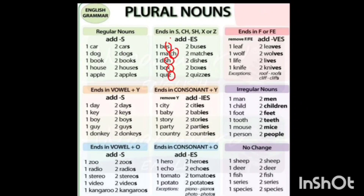The words ending with 's', 'ch', 'sh', 'x', or 'z' — you can directly add 'es'. Understood?